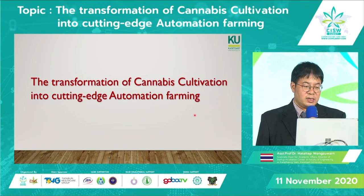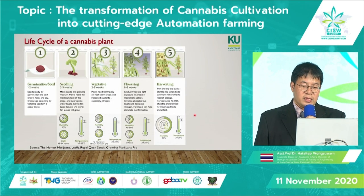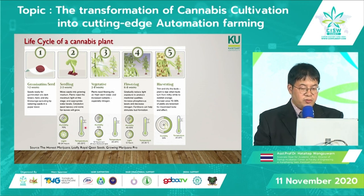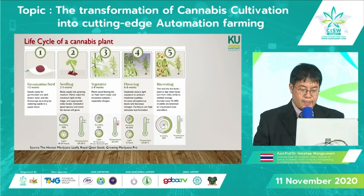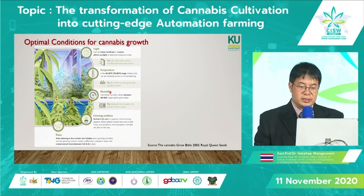This brings me to what I am presenting: the transformation of cannabis cultivation into cutting-edge automation farming. Let's start with the life cycle of the cannabis plant. You can see that humidity, light, and temperature affect each phase differently, and proper control is essential. Cannabis grows best under optimal conditions of light, temperature, humidity, and pH.